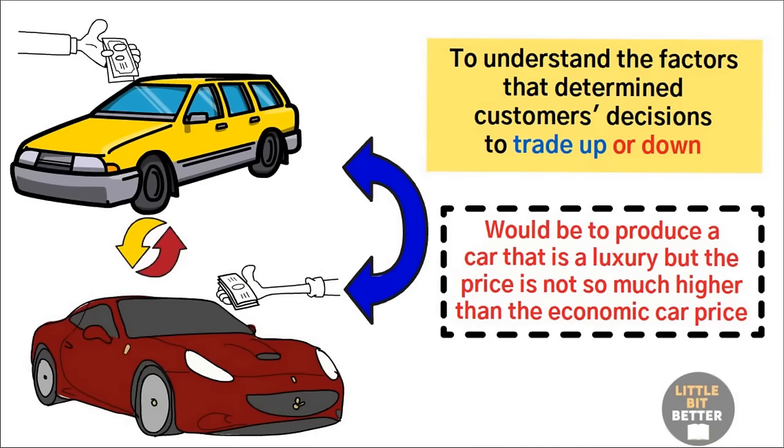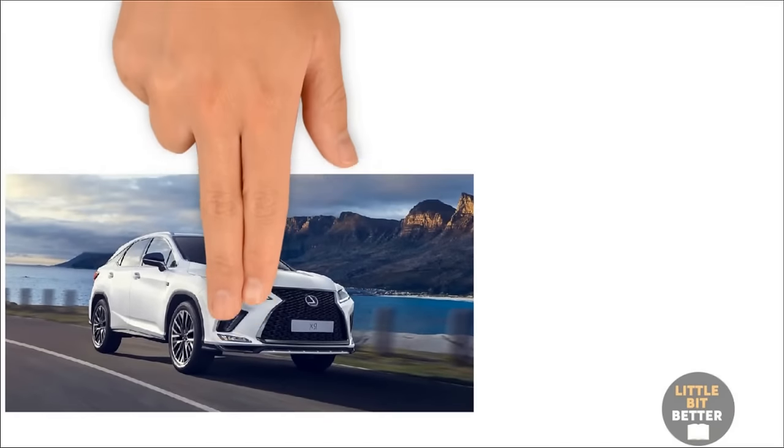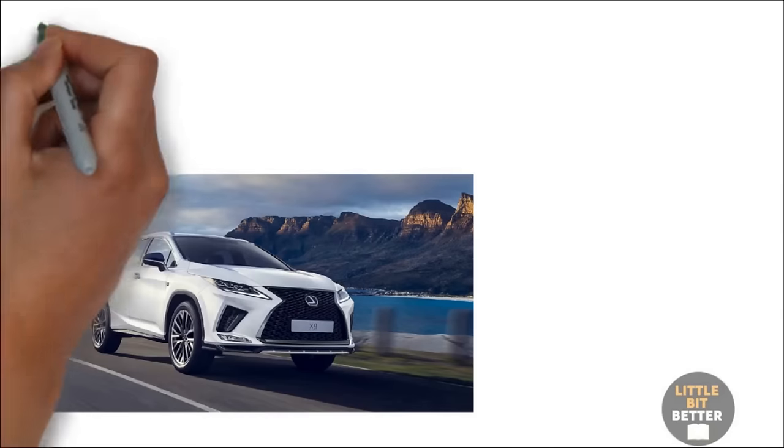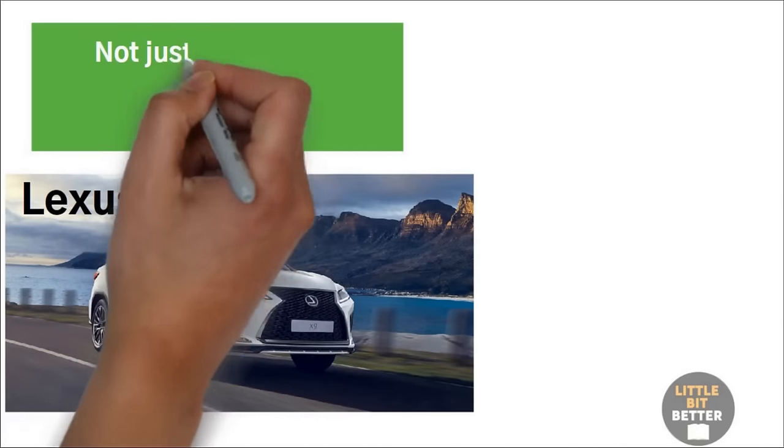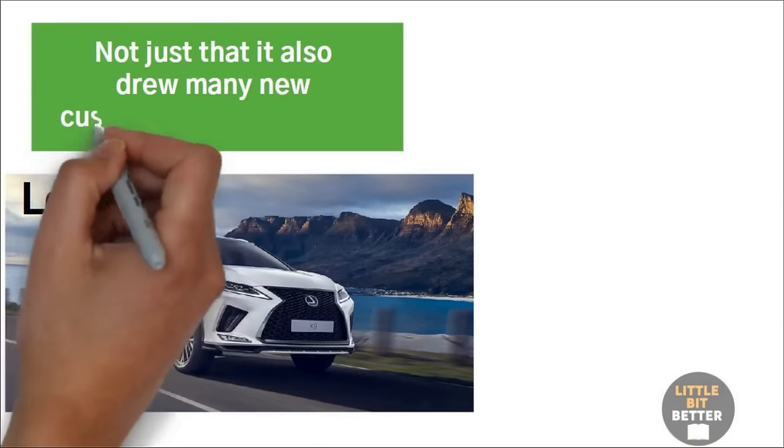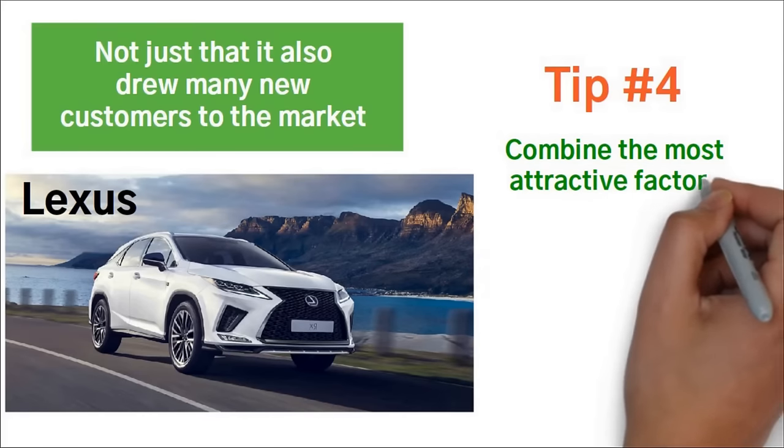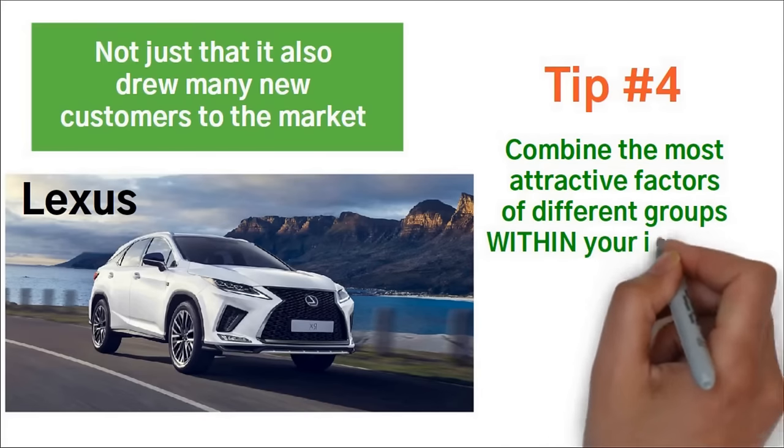This is exactly what Toyota did with its Lexus, offering the quality of high-end cars such as Mercedes and BMW at economy car prices. By doing that, Lexus captured customers from both segments. Not just that, it also drew many new customers to the market. So tip number four for creating a blue ocean is to combine the most attractive factors of different groups within your industry.